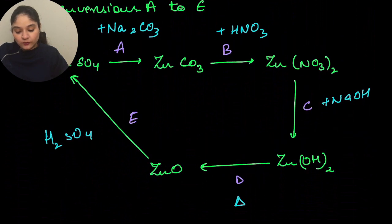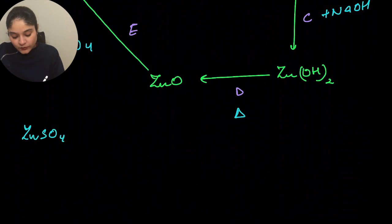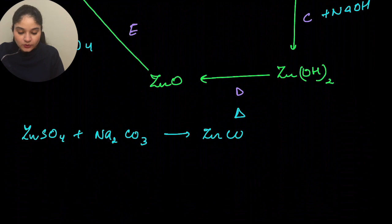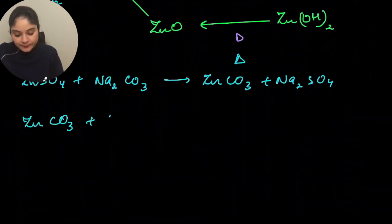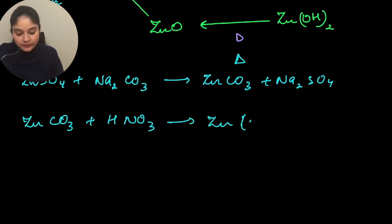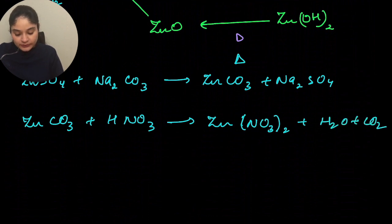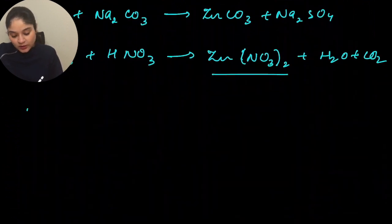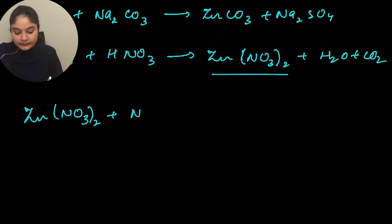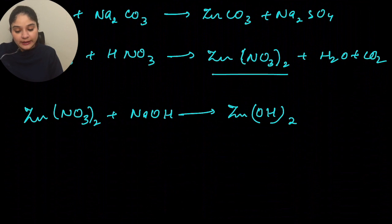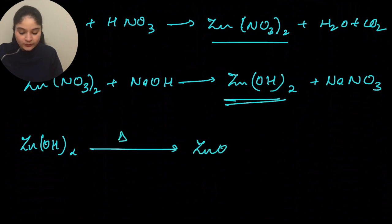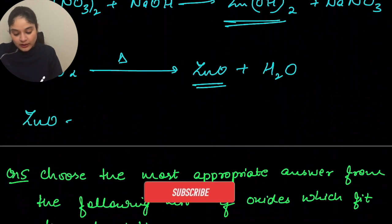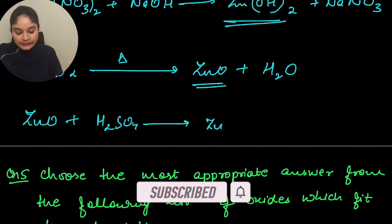The equations are: ZnSO₄ + Na₂CO₃ → ZnCO₃ + Na₂SO₄. Then ZnCO₃ + HNO₃ → Zn(NO₃)₂ + CO₂ + H₂O. Then Zn(NO₃)₂ + NaOH → Zn(OH)₂ + NaNO₃. Then Zn(OH)₂ with heat → ZnO + H₂O. Then ZnO + H₂SO₄ → ZnSO₄ + H₂O.